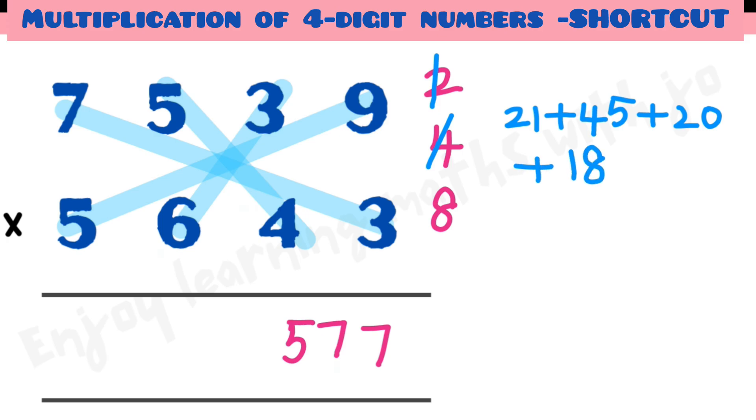Add all these numbers, we get 104 plus remaining 8 is 112. We write 2 here and remaining 11.